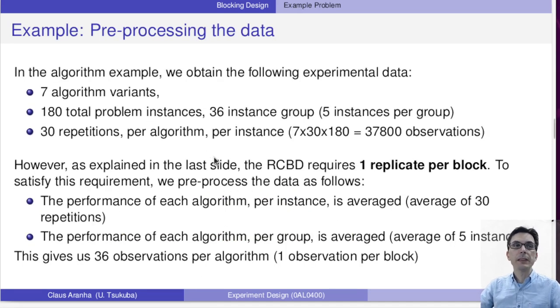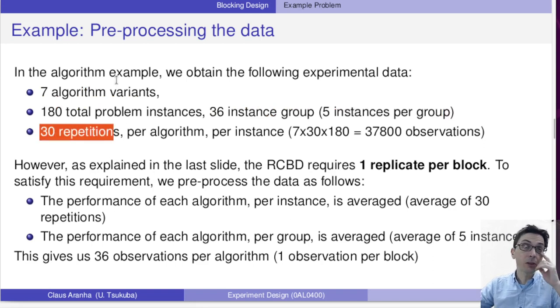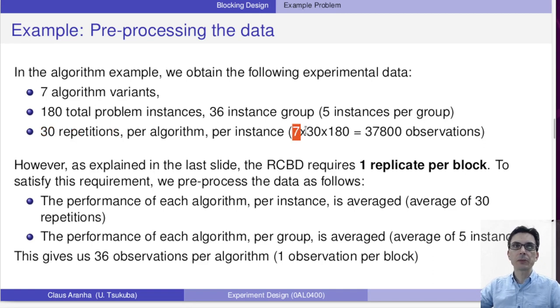In the algorithm example, we obtain the following experimental data. We have seven algorithm variants and 180 total problems with 36 groups, five problems per group. Then we have 30 repetitions per algorithm per instance. So we are running seven algorithms times 30 replications times 180 problems, which gives us 37,000 observations total. That's a lot. We are not going to use all of these observations though.